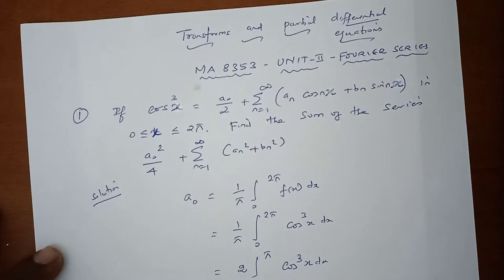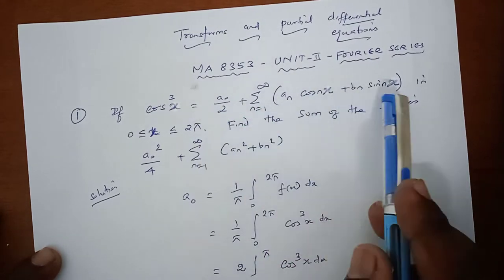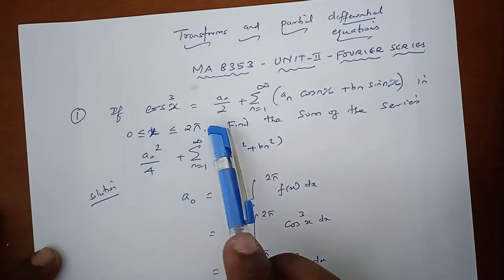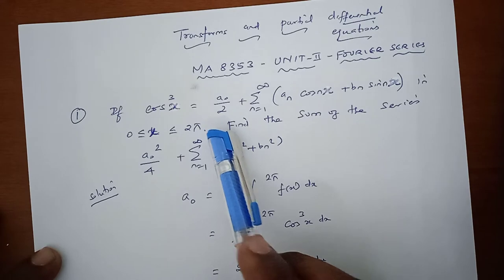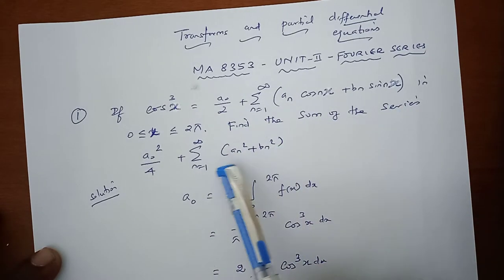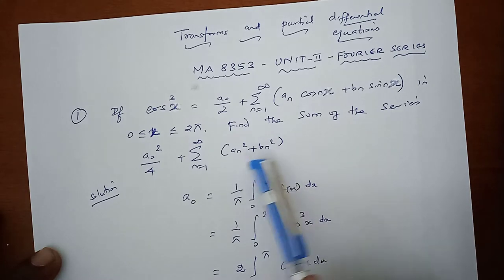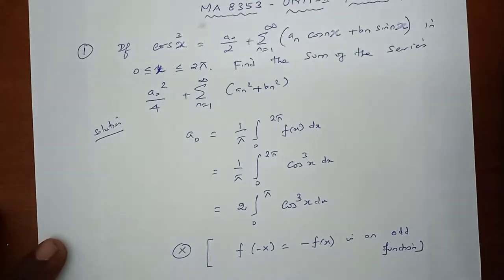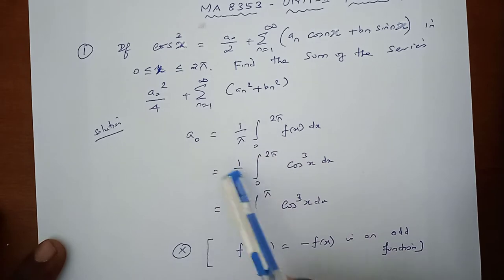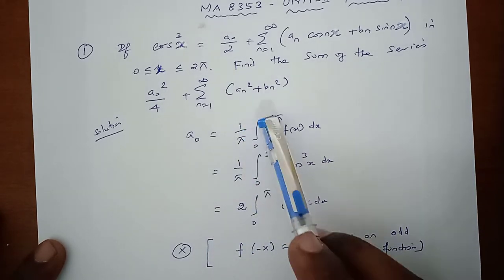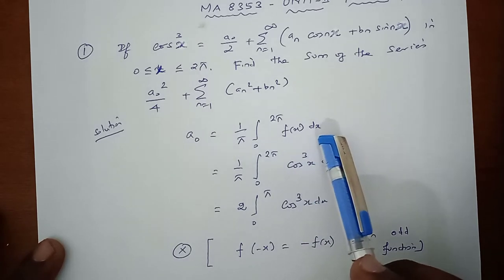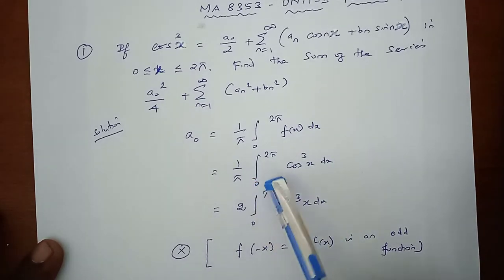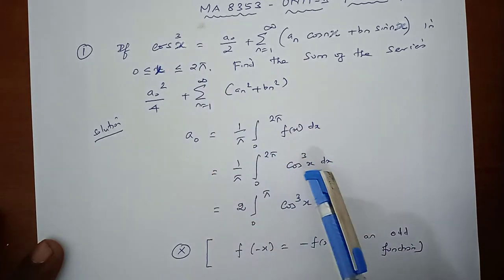This is the statement of the problem. cos³x equals the definition of a Fourier series in the full range class interval 0 to 2π. We have to apply Parseval's formula and compute the values. First, take the full range series 0 to 2π and apply the a₀ formula: a₀ = 1/π × integral from 0 to 2π of f(x) dx.